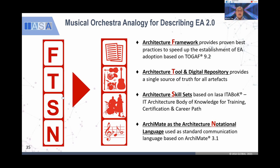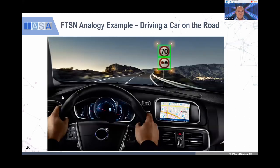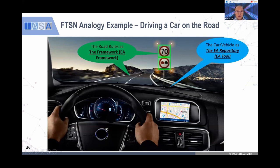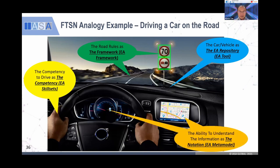The analogy for driving a car: the framework is about the rules — the traffic rules — which are quite similar anywhere in the world, except for left-hand drive versus right-hand drive. The car is what we call the repository — it has an engine, it can run and drive from one point to another. Then the skill set and the metamodel are like the speedometer, GPS, and temperature gauges — all standard. Almost in any car when you sit in, you know this is the water temperature, this is the fuel, etc. That's the function of the notational model like ArchiMate.